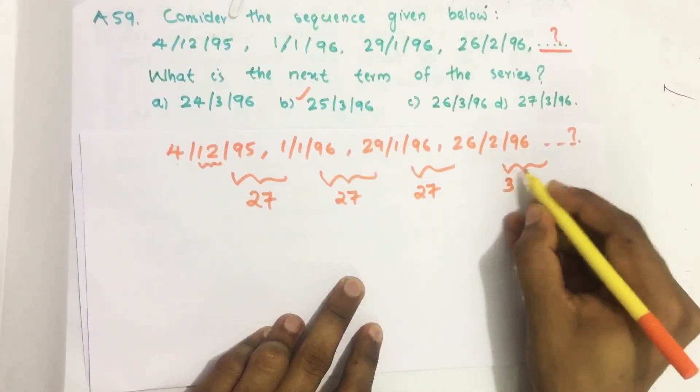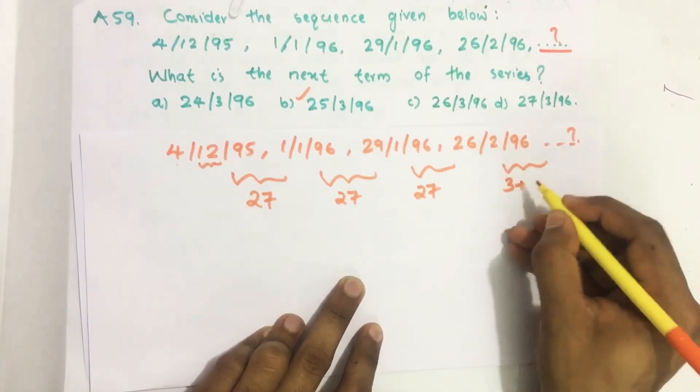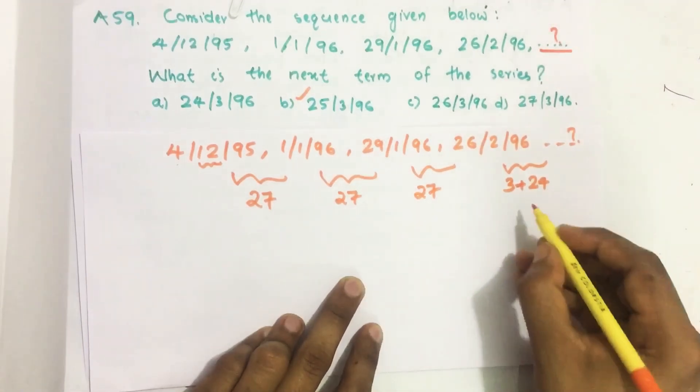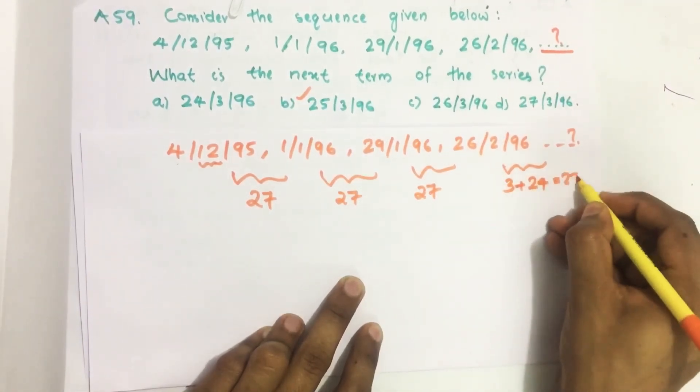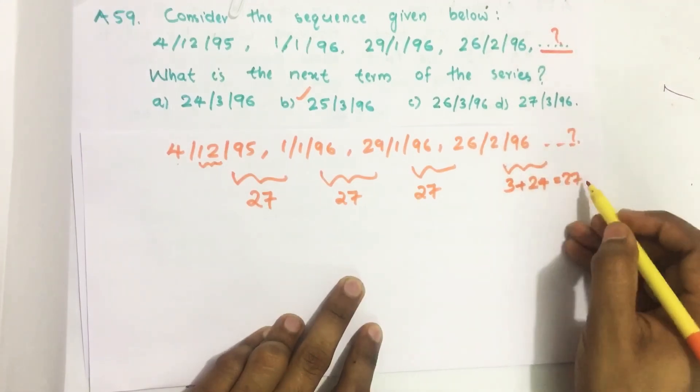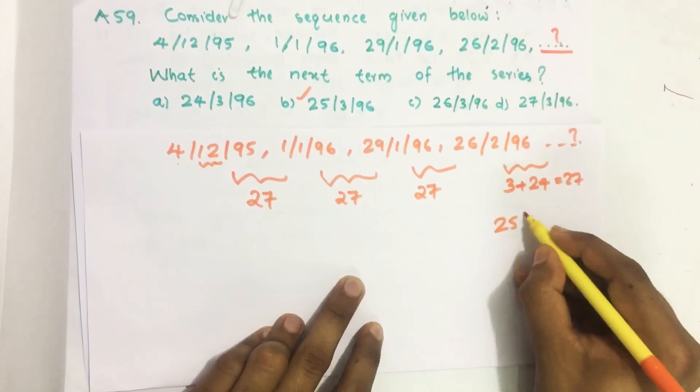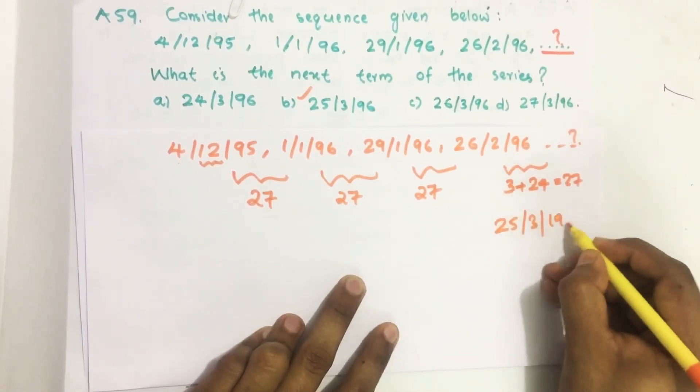So 3 more, 3 days from February and we take 24 more days from March. So total we get 27. So the next date will be after 27 days it will be 25th March 1996.